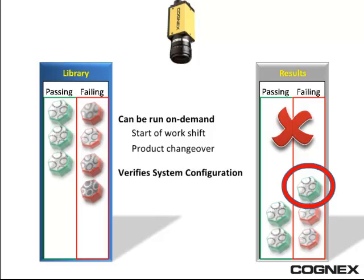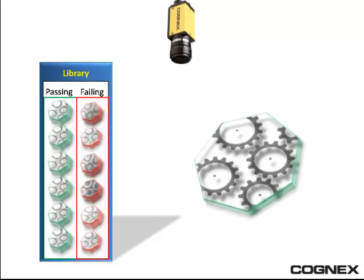When the expected results are given, they know the run of actual product will be inspected correctly. This can eliminate both false rejects and the passing of failed parts. Another key issue in machine vision is when a process variation leads to an adjustment of the inspection criteria.